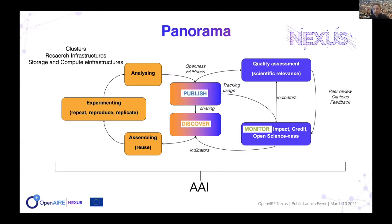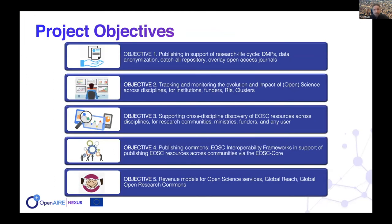The project objectives are five. The first is to support publishing services in support of the research life cycle. The idea is to fill the gap, because publishing already takes place within research infrastructures and data repositories. But when this is not possible — for several reasons depending on the research infrastructure or the long tail of science — we offer services for that.